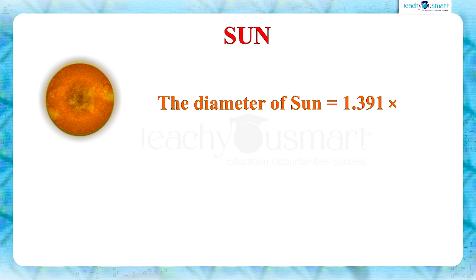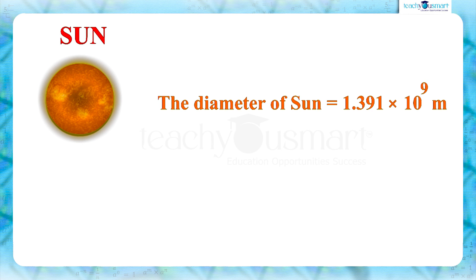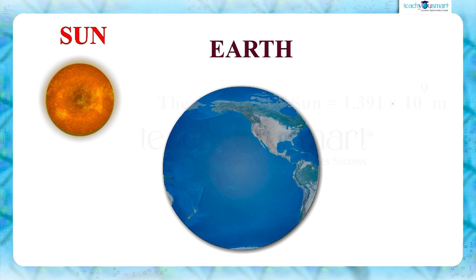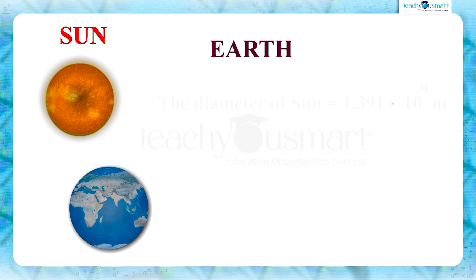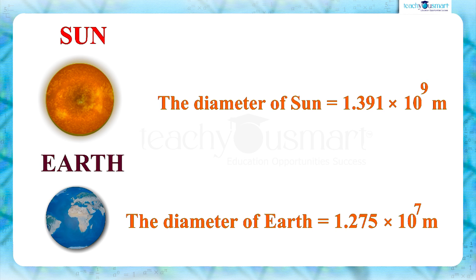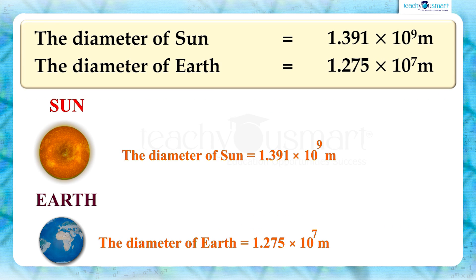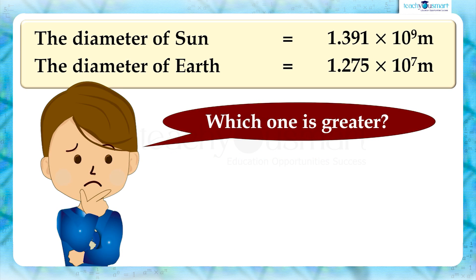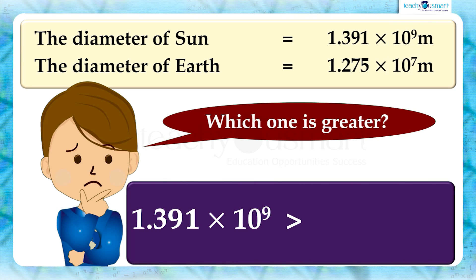We know the diameter of the Sun is 1.391 multiplied by 10 raised to 9 meters, and the diameter of Earth is 1.275 multiplied by 10 raised to 7 meters. These two quantities are very large. Can you say which one is greater? Looking at the exponents of 10, we can see one is 9 and the other is 7. So, 1.391 multiplied by 10 raised to 9 is greater.